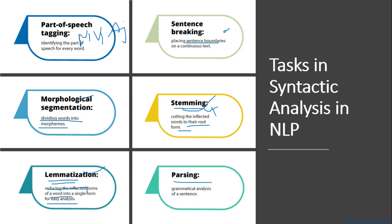Parsing is one of the important parts of syntax analysis. In parsing, we try to check whether a sentence is grammatically correct by building a parse tree. A tree can be built in two forms: a top-down approach or a bottom-up approach. On the basis of the tree created from the grammatical rules, we try to identify whether the sentence is syntactically correct or not. All these tasks help to understand text in natural language.